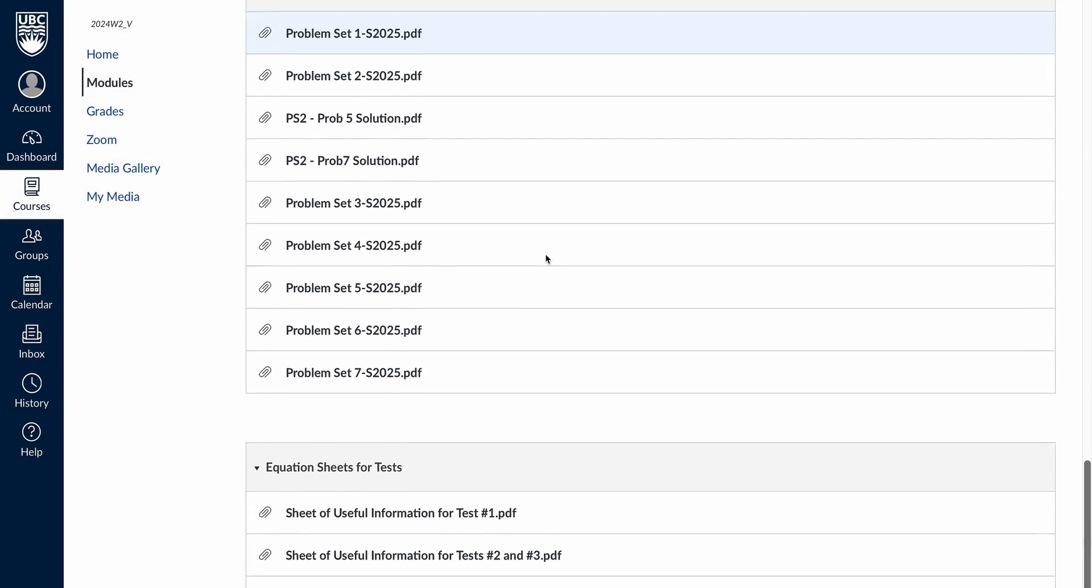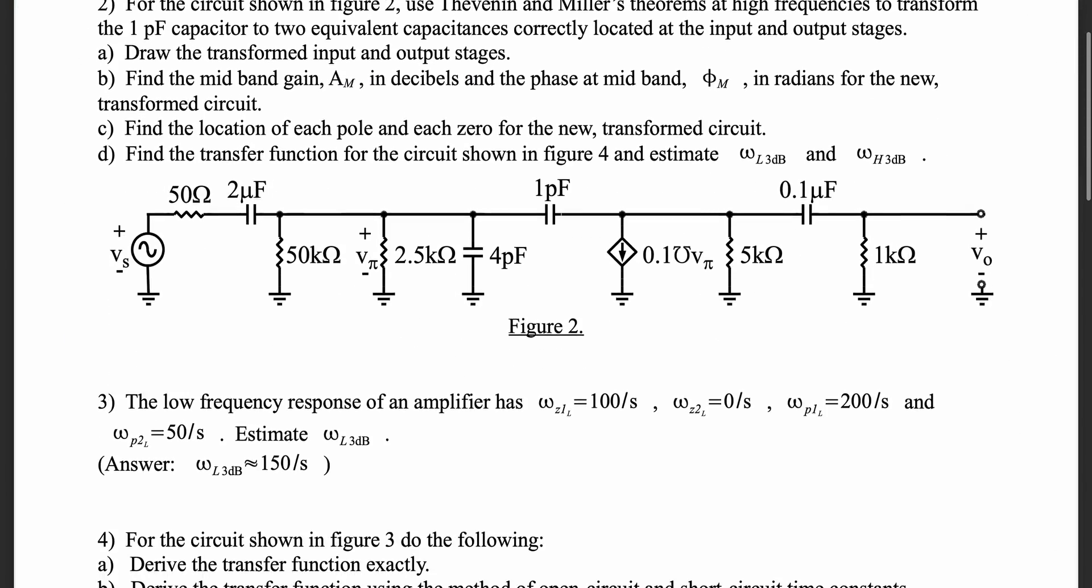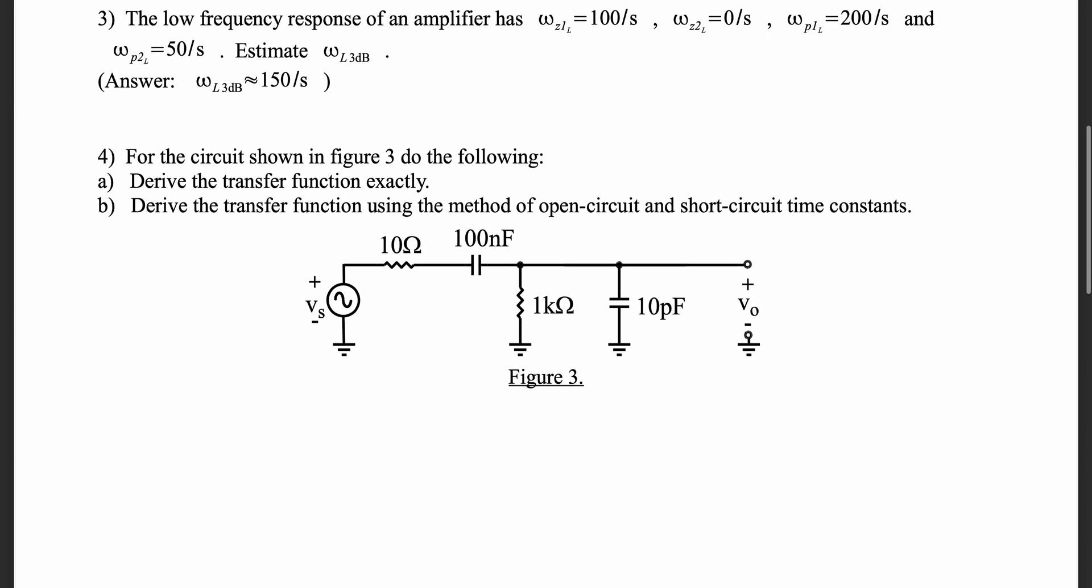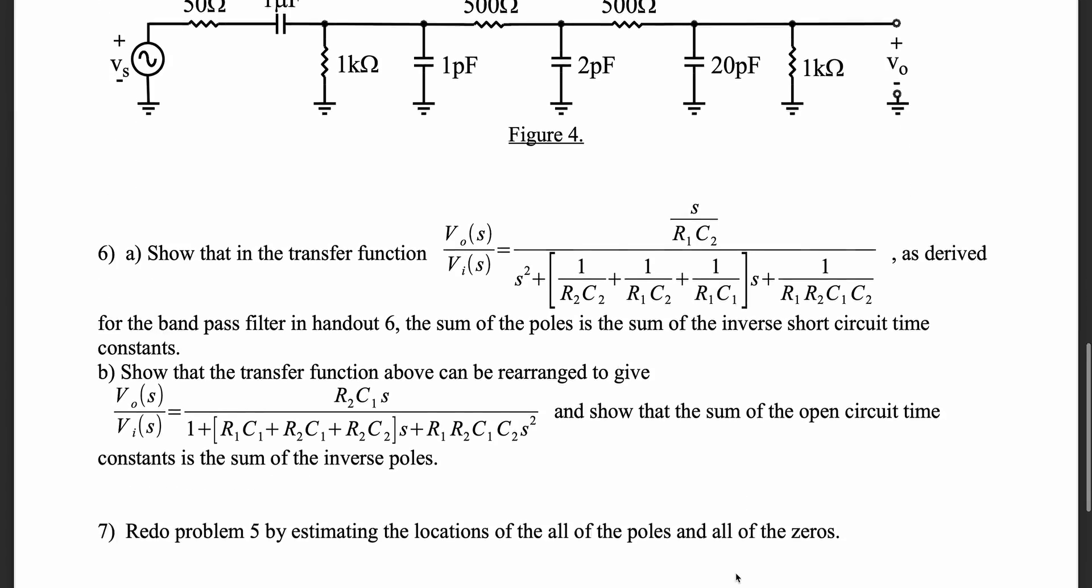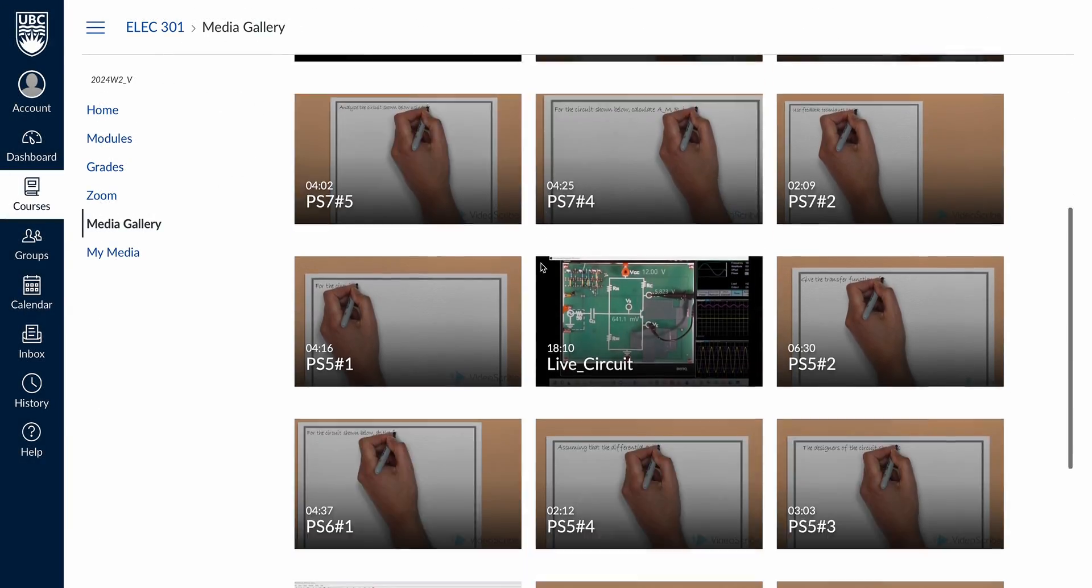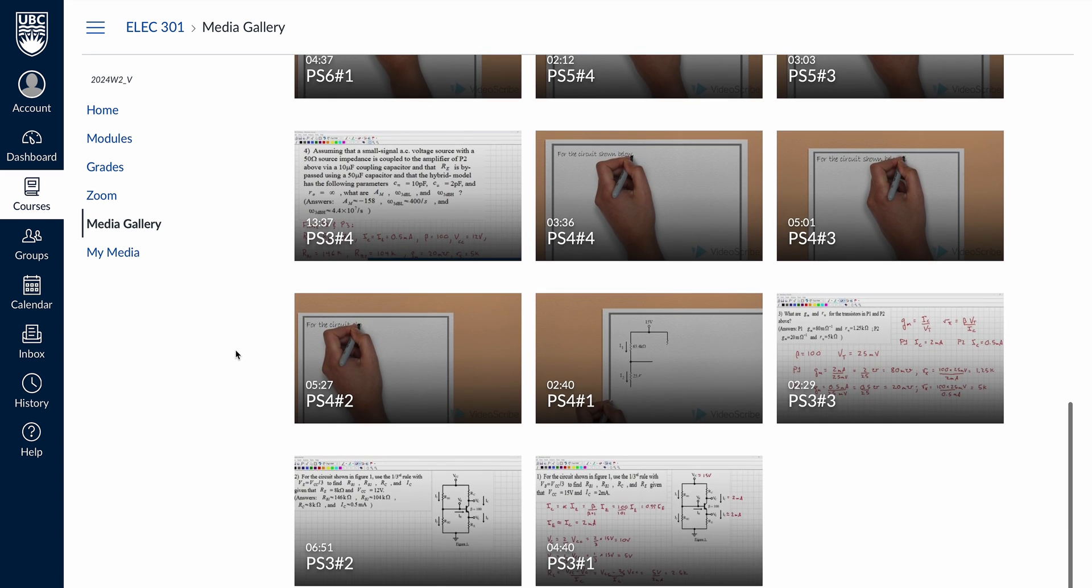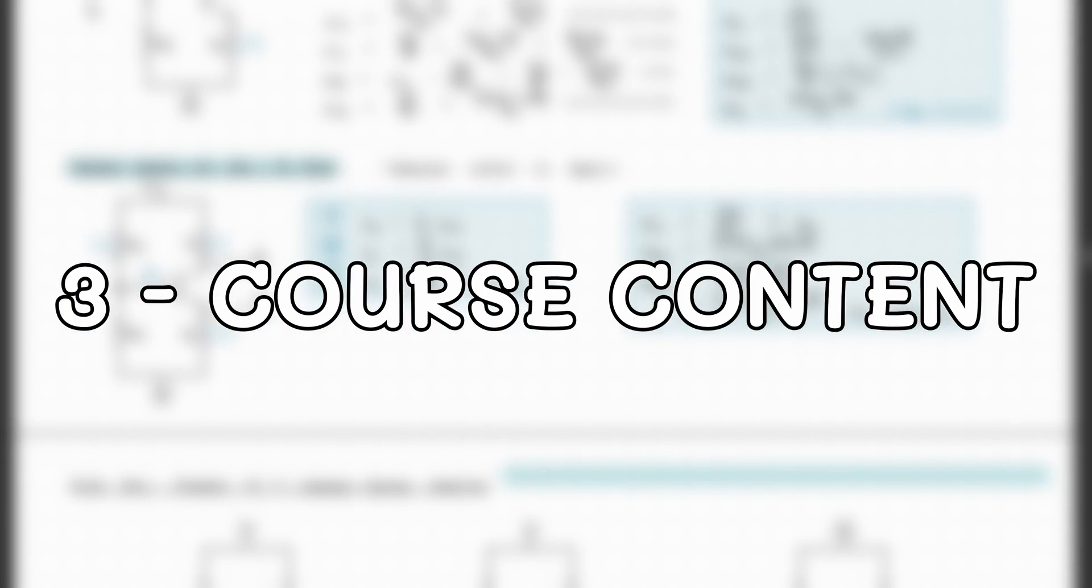In ELEC 301 there are a total of 7 problem sets posted throughout the semester and as the name suggests they are a set of problems that are designed to help you practice the concepts that are taught in class. There are solutions to some of the problems in the problem sets but not all of them, so just a heads up on that. Even though they are not for marks, I would strongly recommend that you do them before each of your tests and we will get into why when we cover what the tests are like. Now let's get into what you're actually going to learn in ELEC 301.